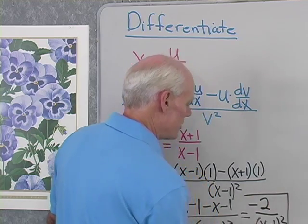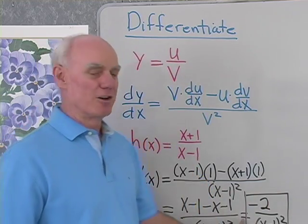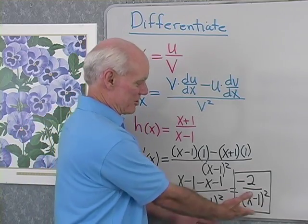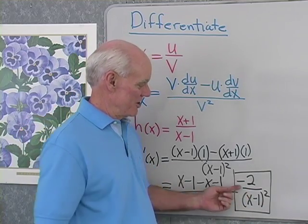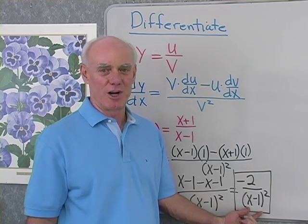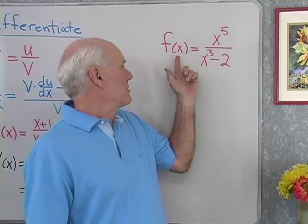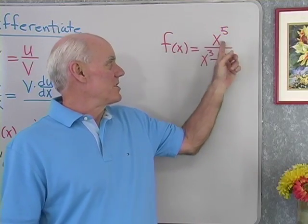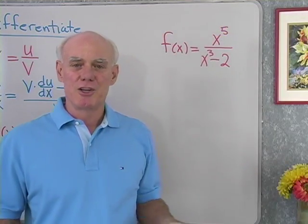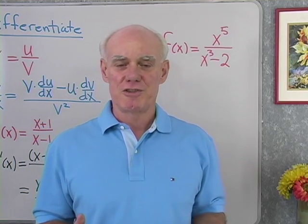So there's my derivative of this function, simplified: negative 2 over x minus 1 quantity squared. Let's try another problem. For this problem, f of x is x to the fifth over x cubed minus 2, a quotient of two functions of x.